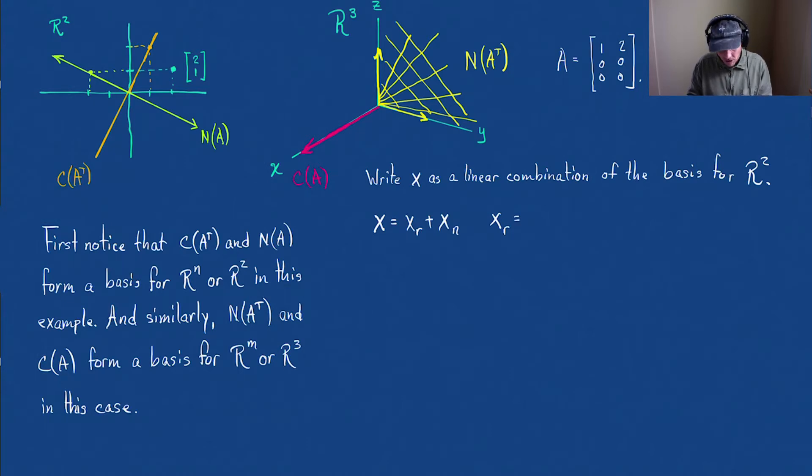in the row space is, well, the row space is that orange line, and that was defined by the vector 1, 2. So the row space really is just a linear combination of A times 1, 2. OK. And look at our null space, X_n.